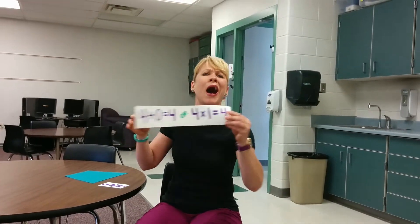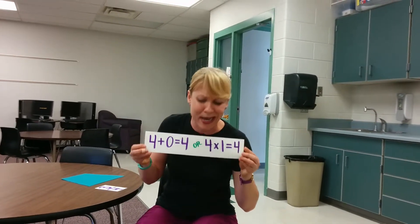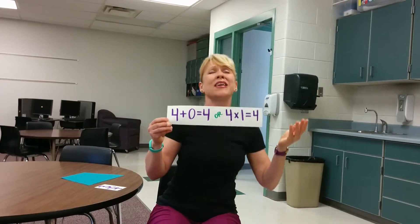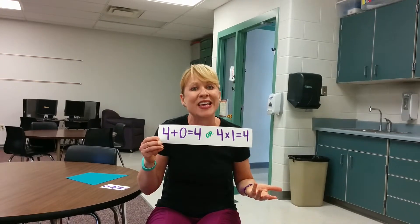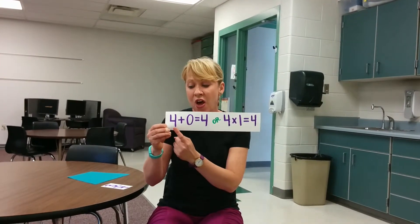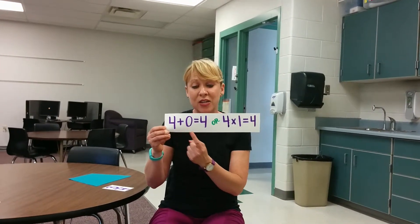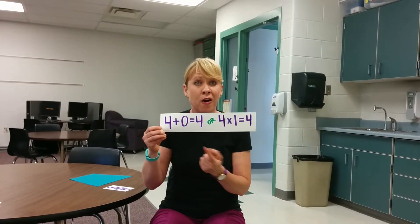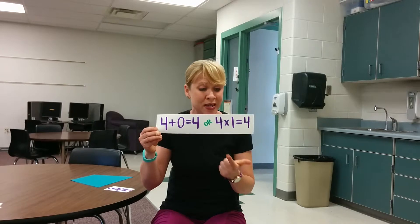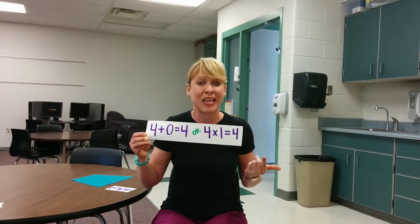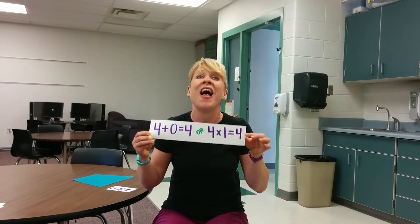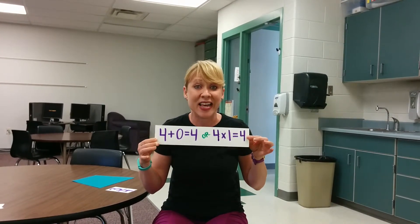Easiest property of them all: identity. Because every number wants to be itself. 4 plus 0 equals 4 — it wants to be itself. Or 4 times 1 equals 4. That's identity.